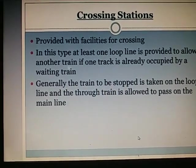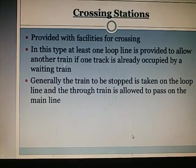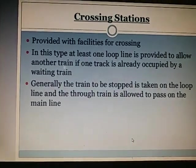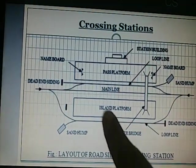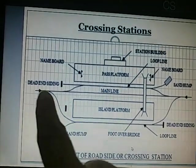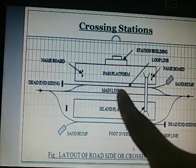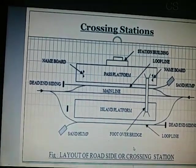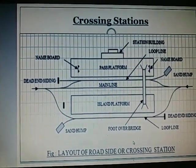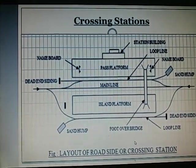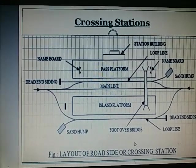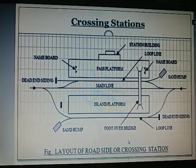Generally the train to be stopped is taken on the loop line, and the through train is allowed to pass on the main line. You can see here the main line and the loop line. Crossing stations are useful when a fast train needs to cross or overtake a slow-moving train.